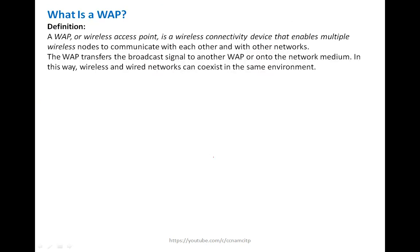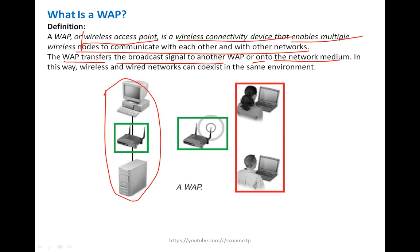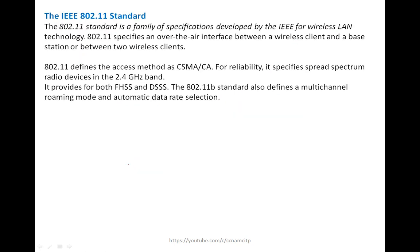Wireless Access Point (WAP): a wireless access point is a wireless connectivity device that enables multiple wireless nodes to communicate with each other and with other networks. The WAP transfers the broadcast signal to another WAP or onto the wired network medium. In this way, wireless and wired networks can coexist in the same environment.